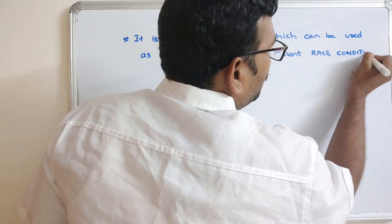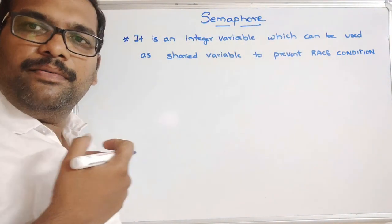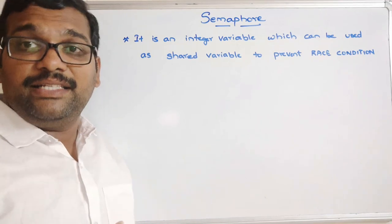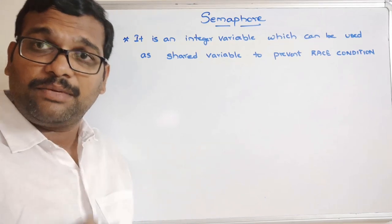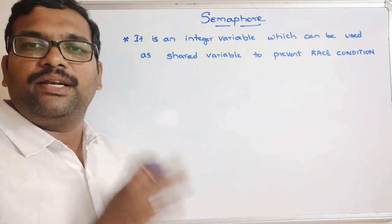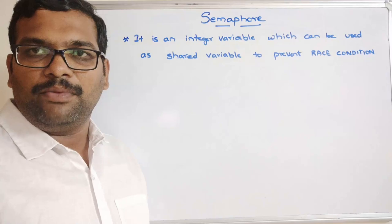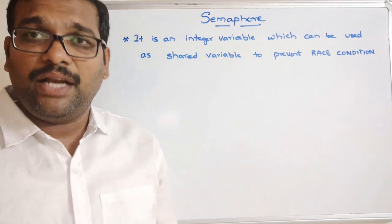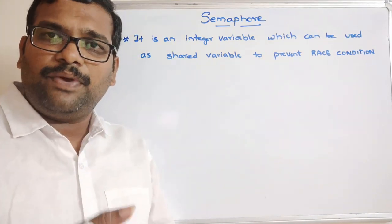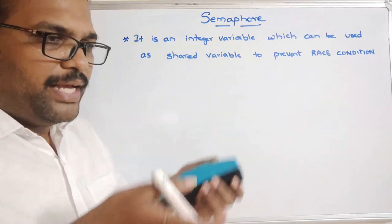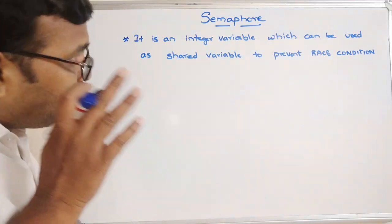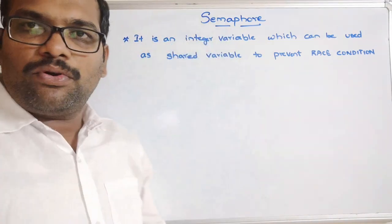In our previous session we discussed the thread concept, process concept, and process synchronization, where we saw the critical section problem. Only one process should be entered into the critical section so that other processes need to wait until the critical section is available. To solve the critical section, three conditions should be satisfied — the first one is mutual exclusion, which means at a time only one process should complete its execution.